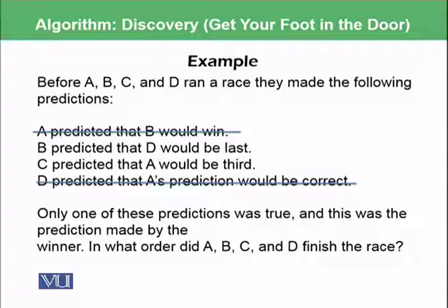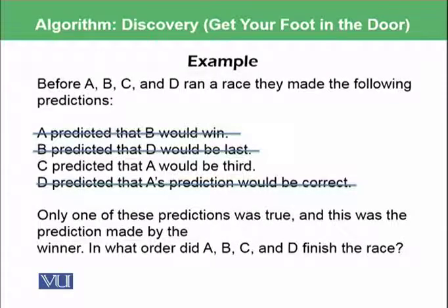This means that B will not be the winner and any winner who is making the statement or prediction would be actually the right one. So this means we can further rule out or reject the second statement that B predicted that D would be last. So after all of this analysis,